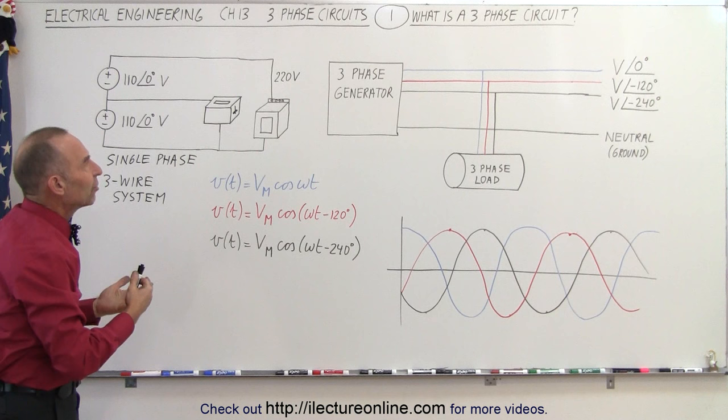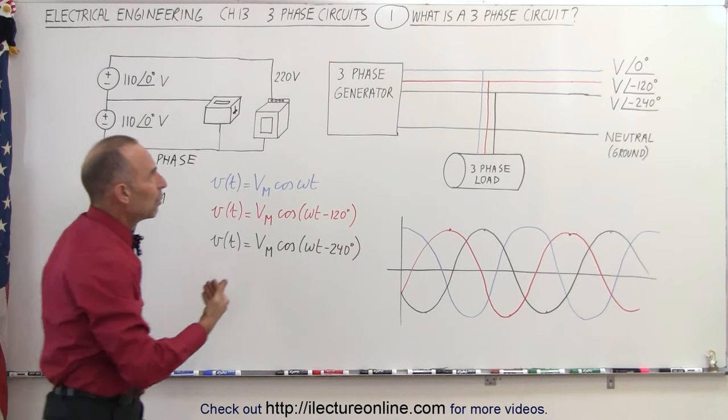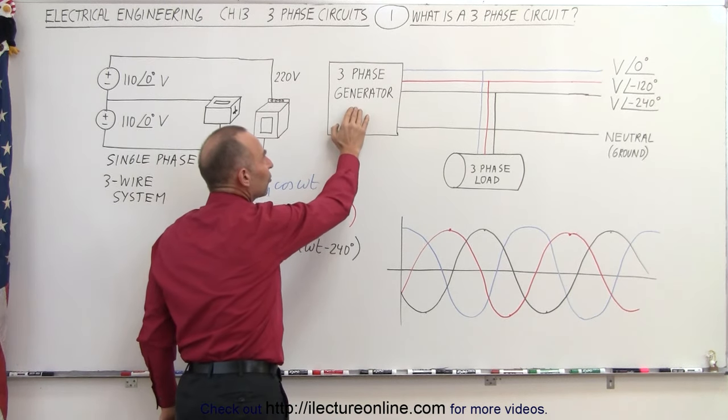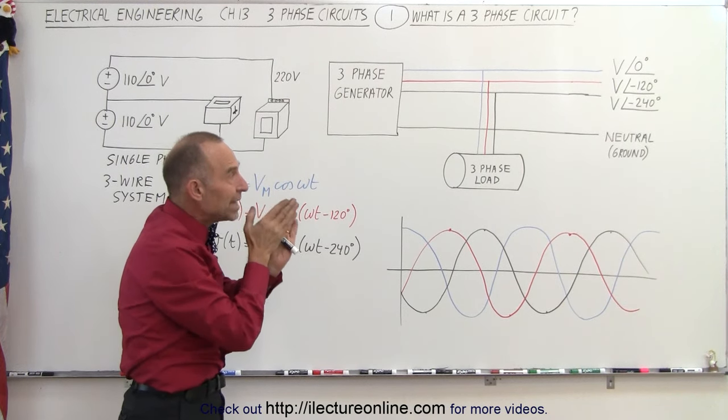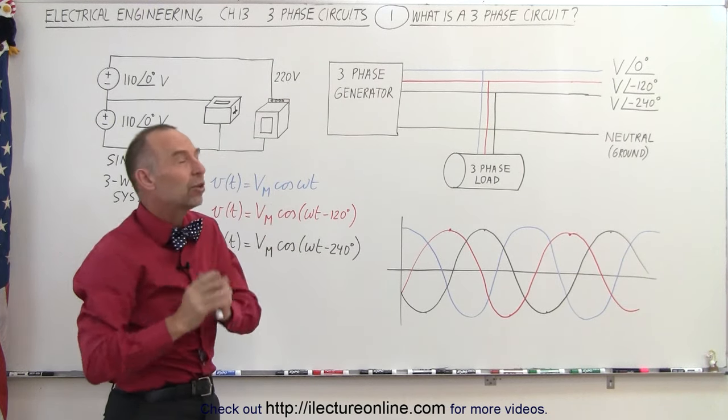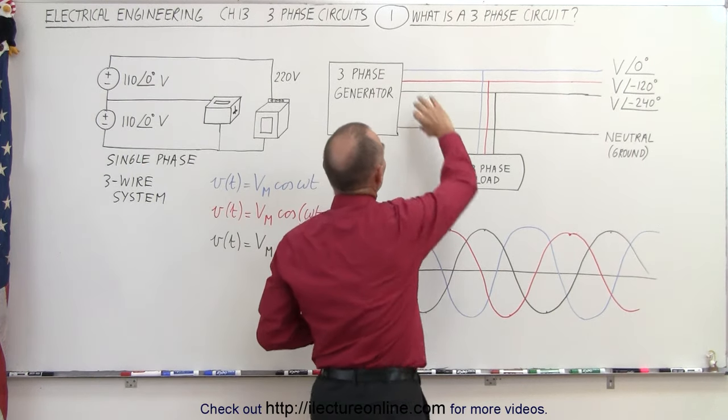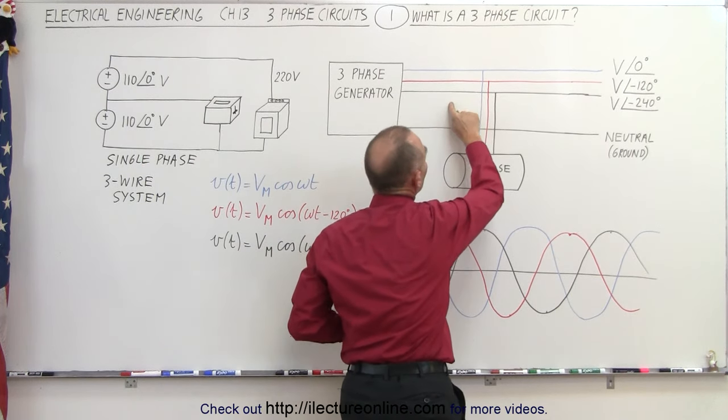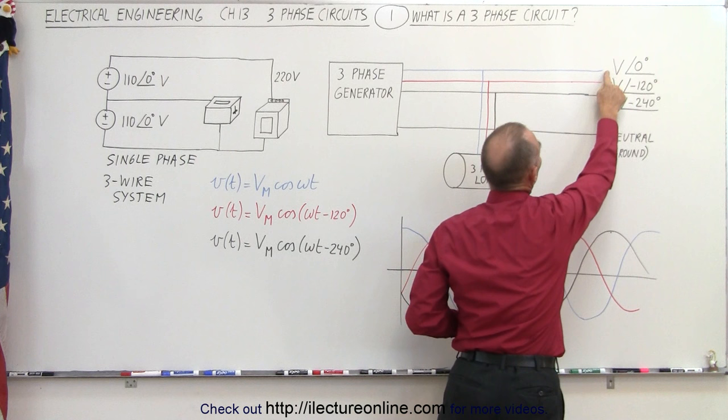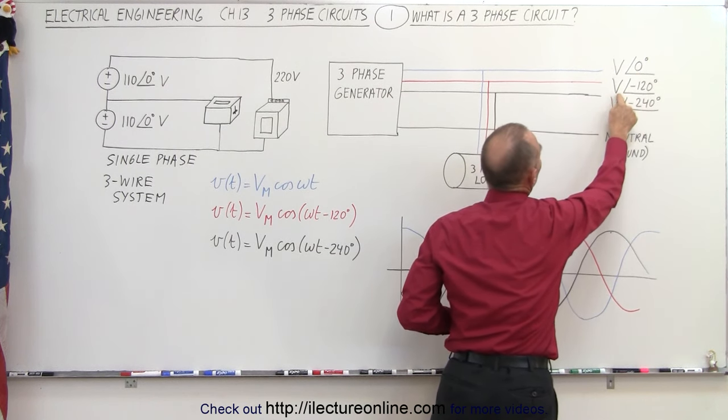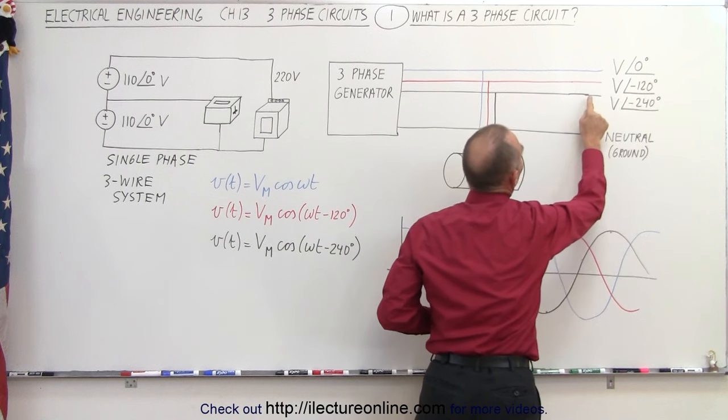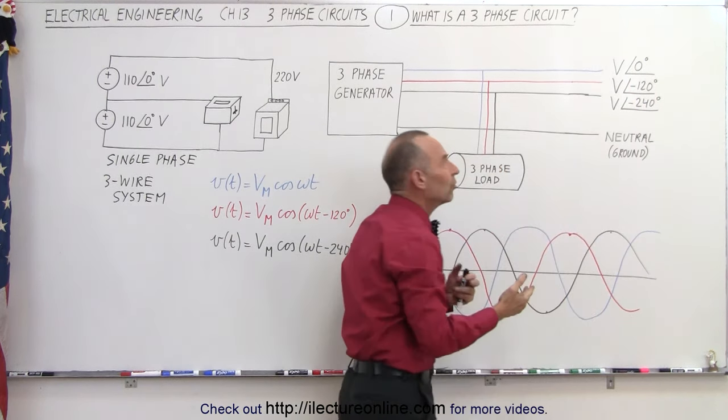So what is the three-phase circuit now? Well, we have what we call three-phase generators that produce voltages at three different phases, 120 degrees apart. For example, the three wires coming out of the generator, the first wire produces a voltage that reaches a maximum at zero degrees, a voltage that reaches a maximum at minus 120 degrees, and a voltage that reaches a maximum at minus 240 degrees.